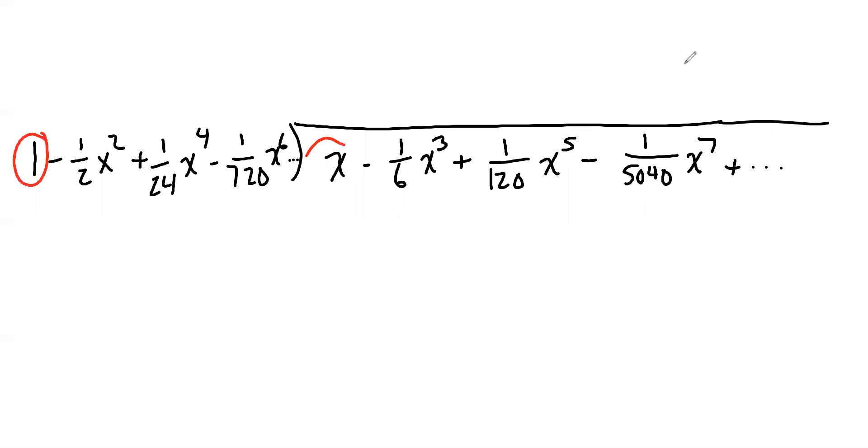But assuming that you're somewhat familiar with it, start by looking at the leading terms and asking how many times is 1 going into x? Or equivalently, what do you multiply by 1 to get x? And the answer is x. Then multiply that times all the terms of the divisor and write all the results underneath the dividend. So let's just take it one at a time. x times 1 is x. So we'll put that here. x times negative 1 half x squared is negative 1 half x cubed.